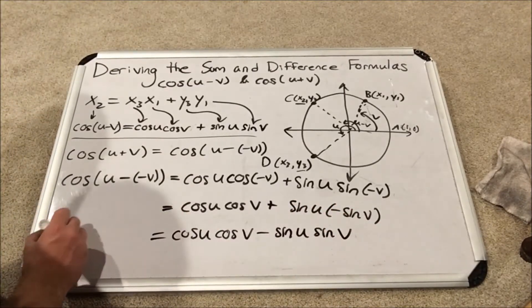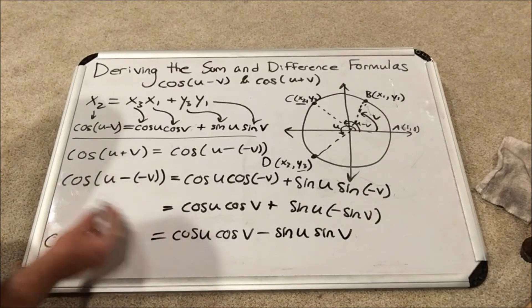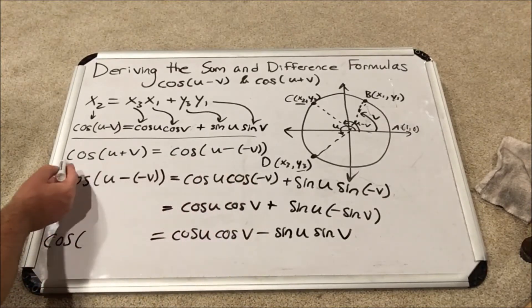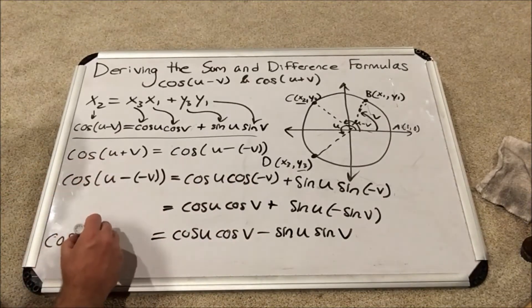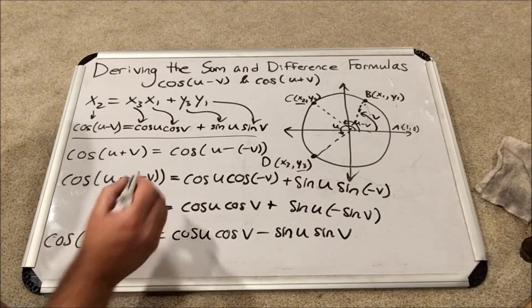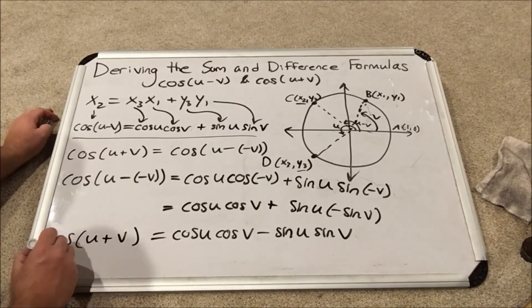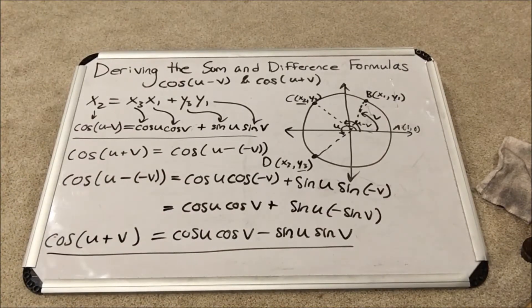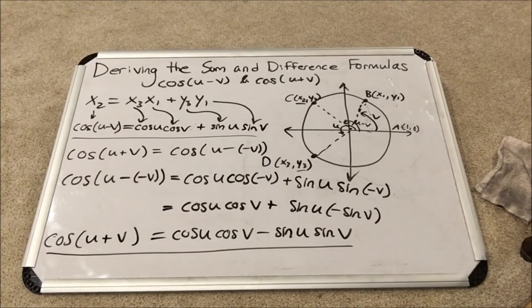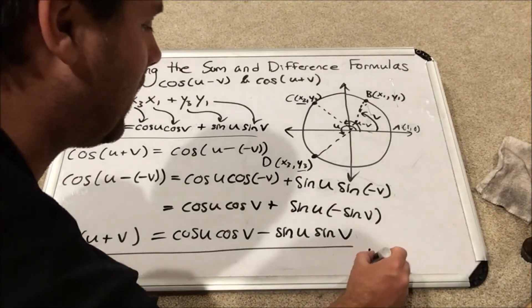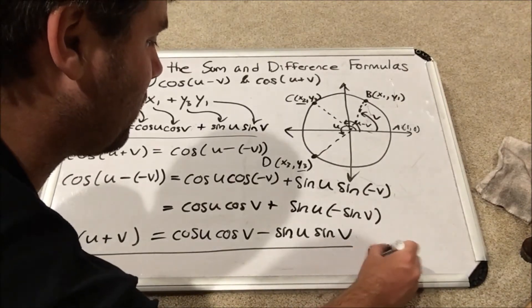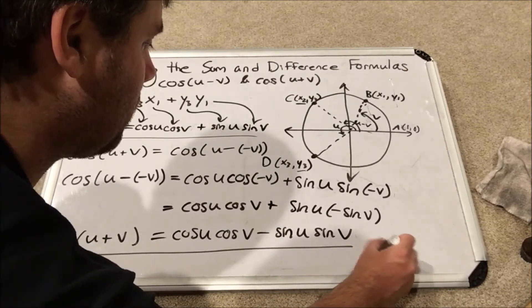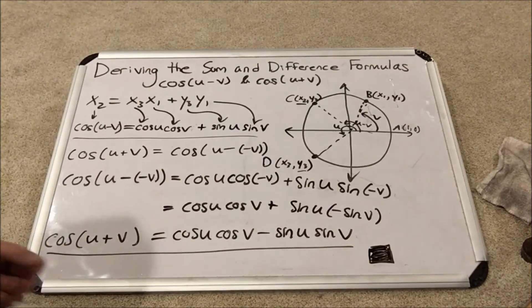This is equal to cosine of u plus v. Now we have the formulas for the cosine of u minus v and the cosine of u plus v. Congratulations for making it through this with me. We have finished the proof and the derivation. Thank you so much for watching.